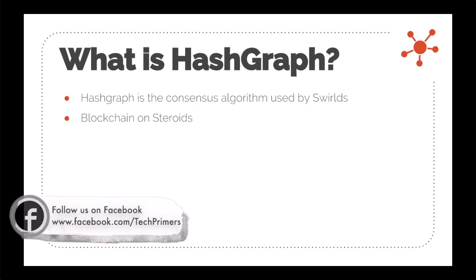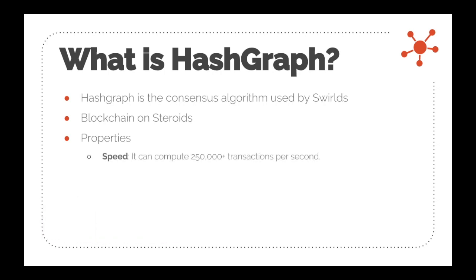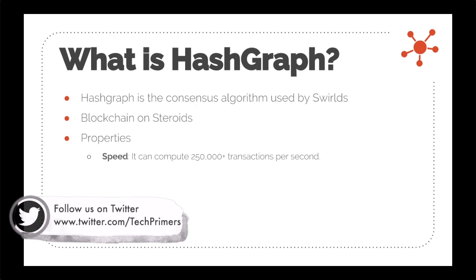Hashgraphs are already being called 'blockchain on steroids.' There are a few properties truly unique to hashgraph. First, speed: it can compute more than 250,000 transactions per second. Blockchains, by comparison, can only do about seven transactions per second.